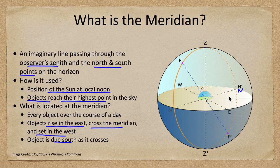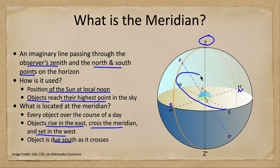Here we have the north point and the south point, the zenith is up overhead, and the orange dotted line would be the meridian. An object would rise in the east and would slowly get higher and higher in the sky. As it crosses the meridian it peaks, and then it would go down and set in the west. That shows that the meridian marks the highest point any object will reach in the sky.